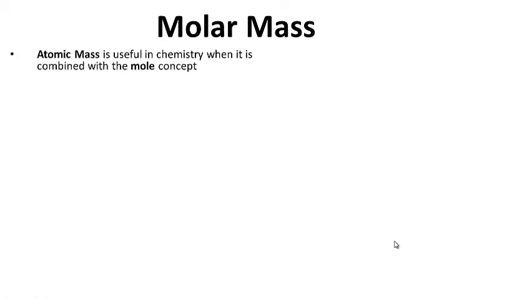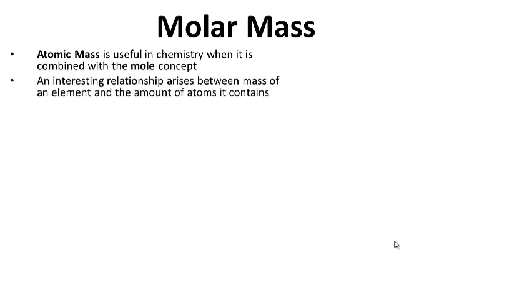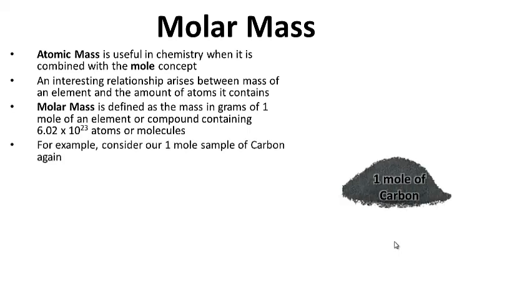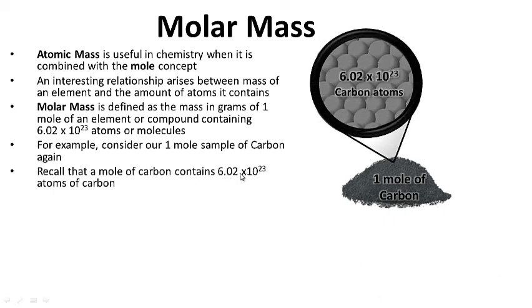Molar mass. Atomic mass is useful in chemistry when it is combined with the mole concept. An interesting relationship arises between the mass of an element and the amount of atoms it contains. Molar mass is defined as the mass in grams of one mole of an element or compound containing 6.02 times 10 to the 23rd atoms or molecules. Let's come back to our one-mole sample of carbon here — recall that it has 6.02 times 10 to the 23rd atoms of carbon in it.